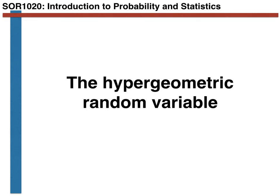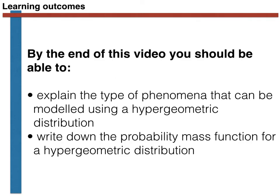Hello. In this video, we are going to introduce another kind of discrete random variable: the hypergeometric random variable. In introducing this kind of variable, we are also going to learn about the difference between sampling with and without replacement. The learning outcomes are that by the end of the video, you should be able to explain what the hypergeometric random variable can be used to model, and you should also be able to write down the probability mass function for a hypergeometric random variable.